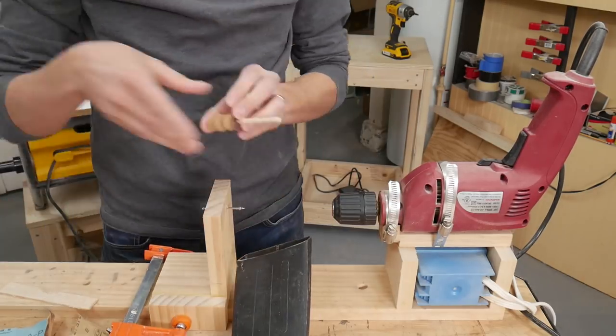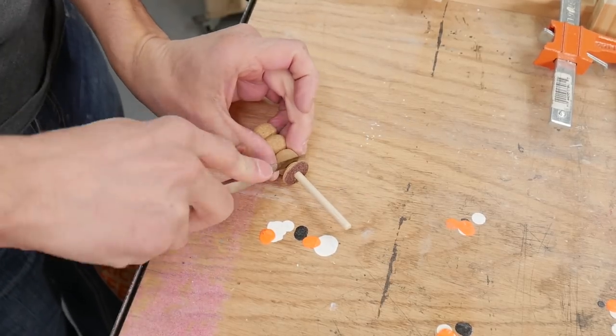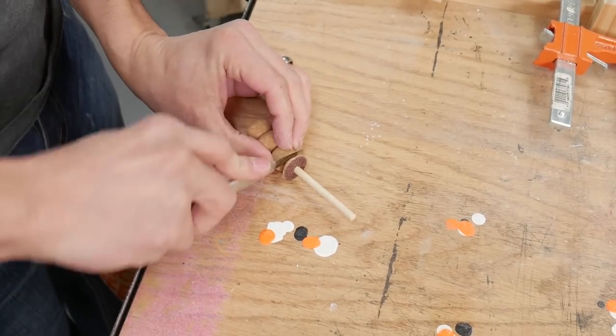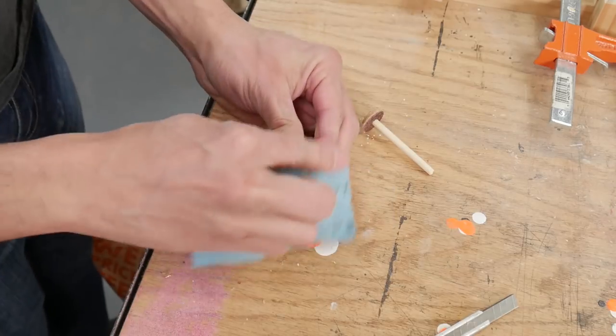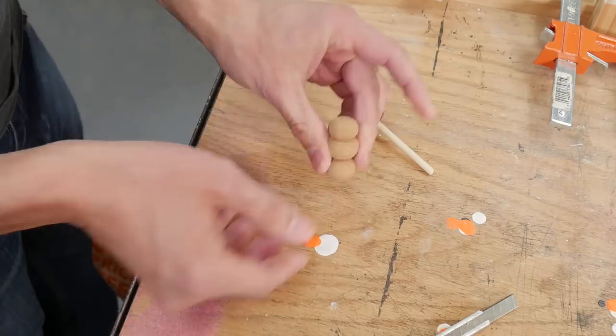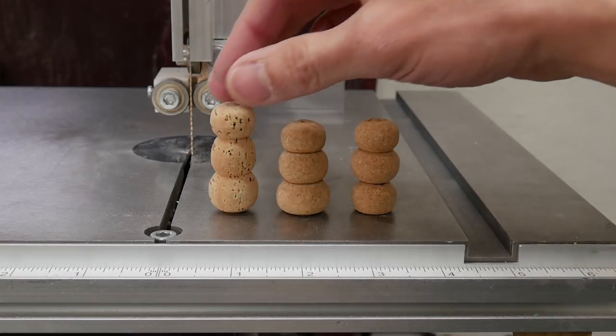After I was happy with the shape, I used a knife to free the snowman from the stick up its butt. I made several snowman shapes and picked my favorite to turn into the ornament.